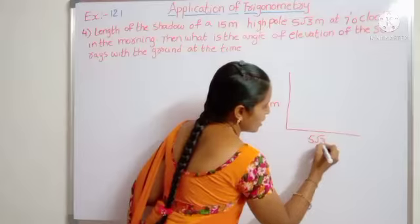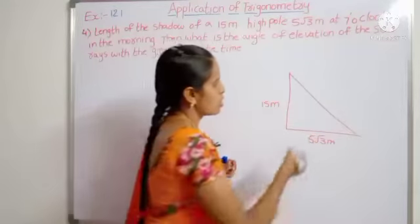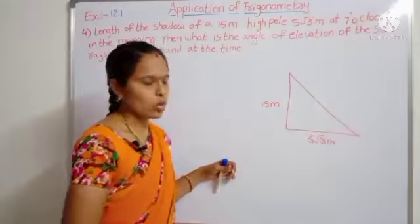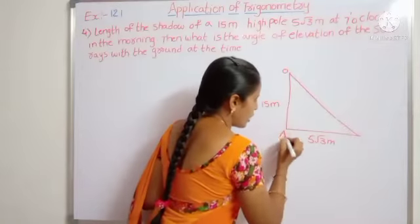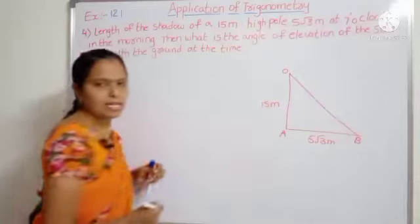So this is 5 root 3 meters here at 7 o'clock in the morning. So join these two points. Here one right angle triangle is formed. The name is OAB. This is the OAB right angle triangle.